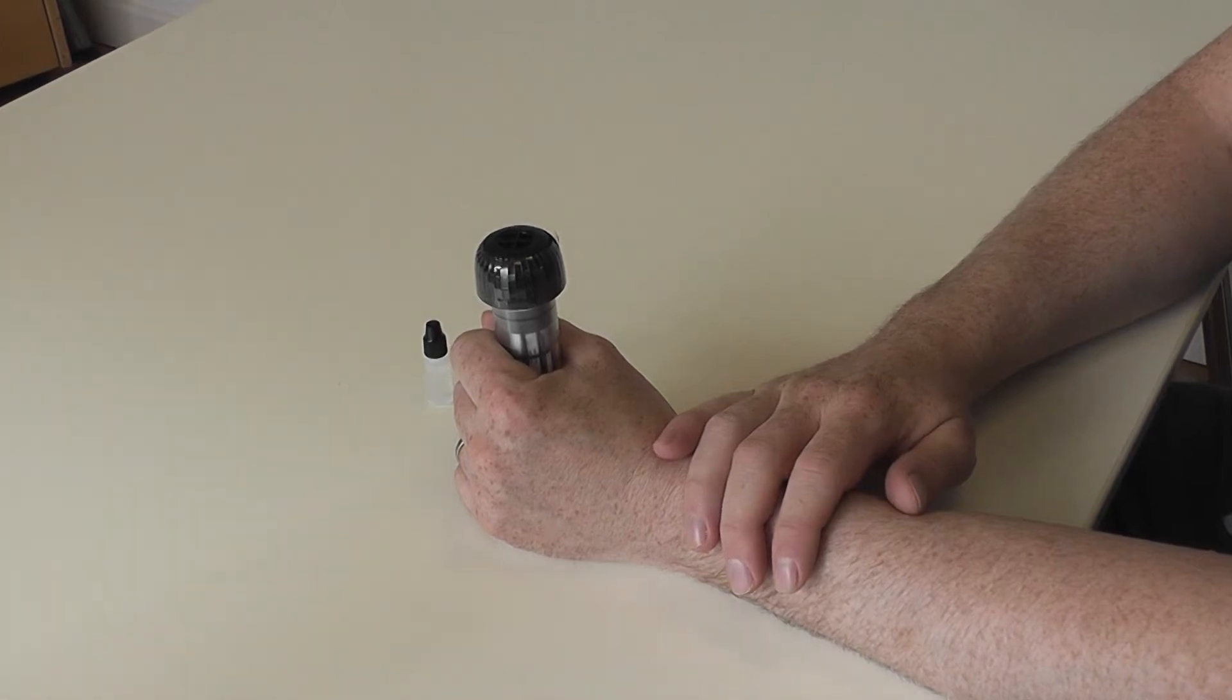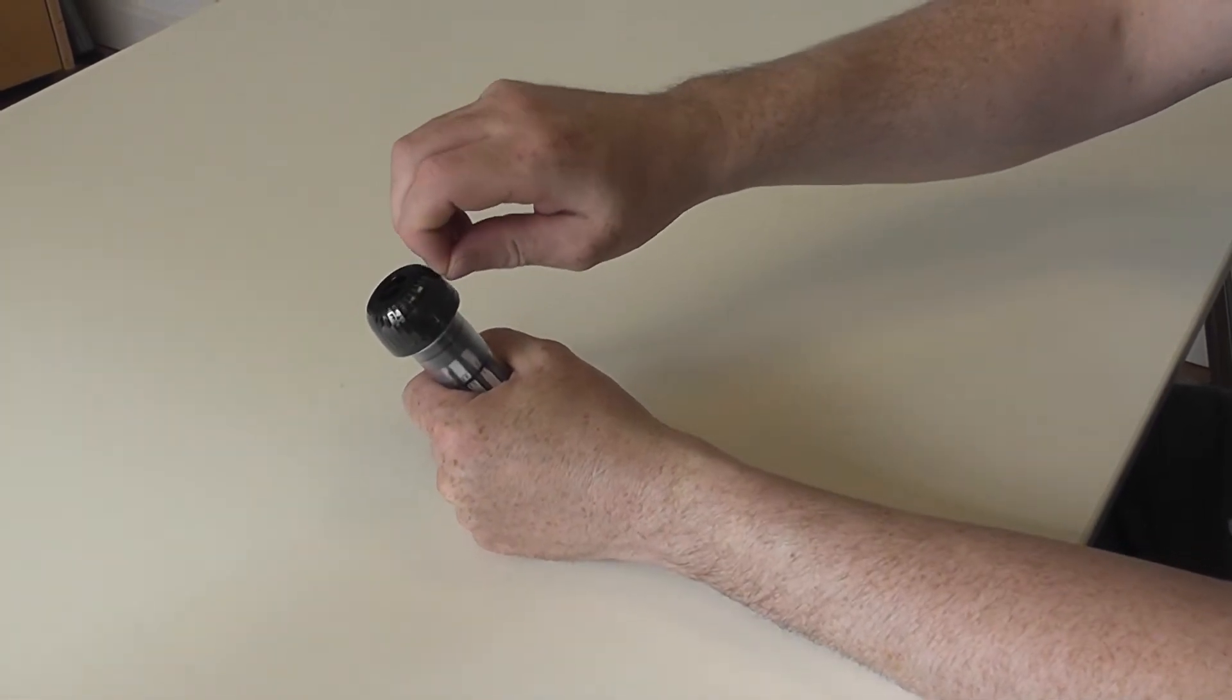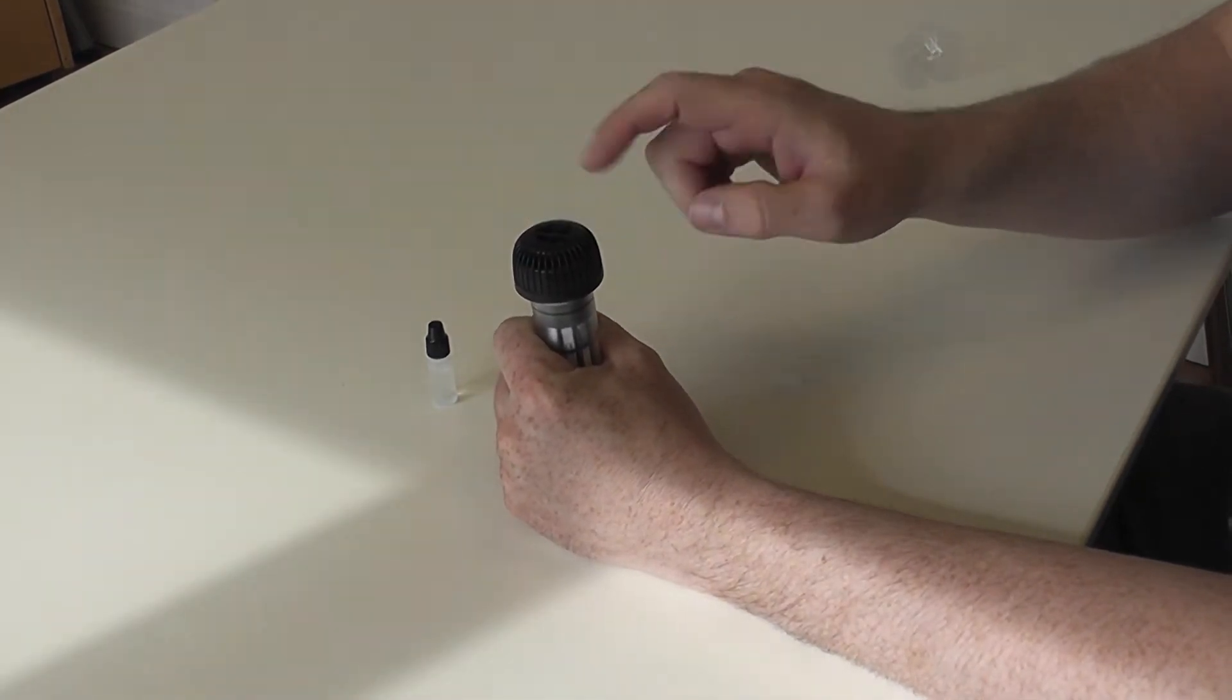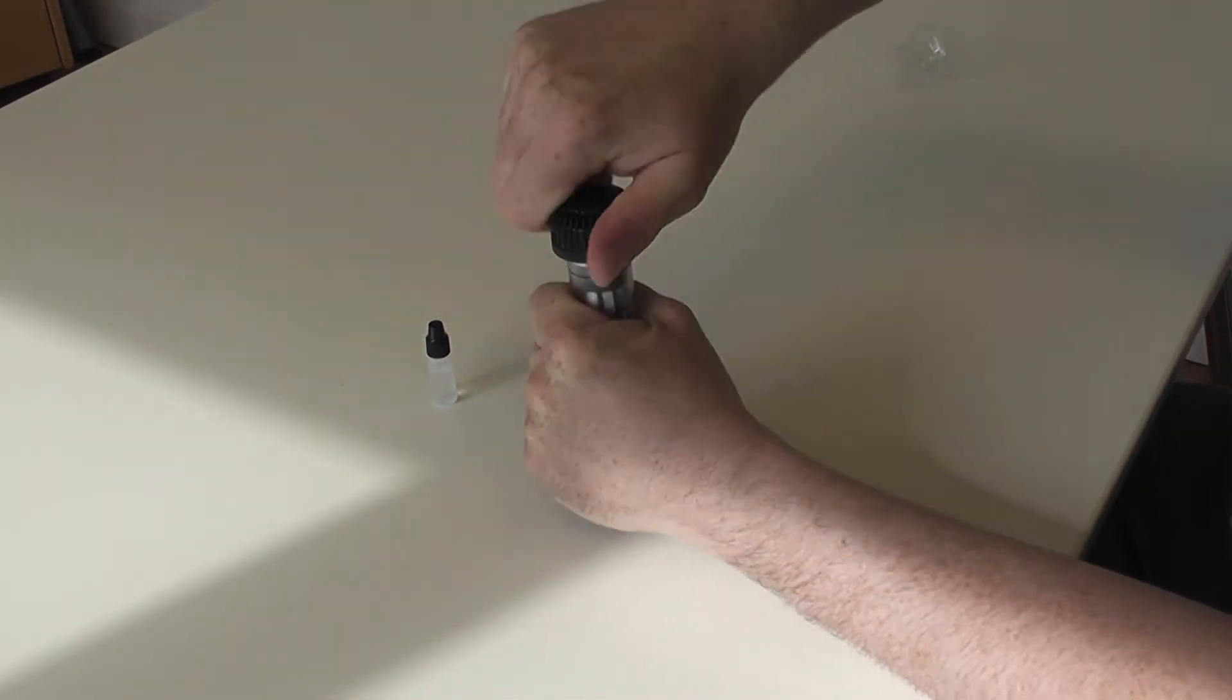The first step to prepare the IMAS device is to remove the tamper-proof seal. Next, remove the cap to expose the sampling sponge.